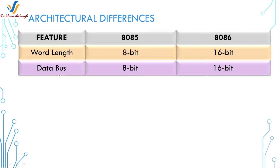There are three types of buses in microprocessors: the data bus, address bus, and the control bus. The bus is a group of communicating lines which carry data for the microprocessor. In 8085, the size of the data bus is 8-bit, and in 8086 it is 16-bit. There is a direct relation between the word length and the data bus.